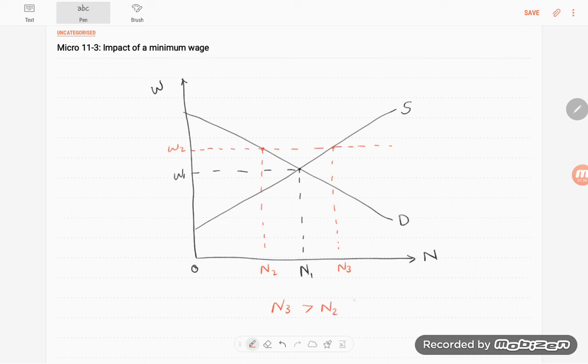So the difference between N2 and N3 is the number of unemployed individuals in this market.